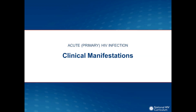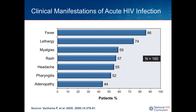Shifting to clinical manifestations: the challenge of diagnosing someone with acute HIV is that the symptoms are so nonspecific. From a graph of about 160 individuals diagnosed with acute HIV, common symptoms include fever, lethargy, myalgias, rash, and headache — a very nonspecific list. A clinician would find it very difficult to pick this out and diagnose acute HIV unless they knew there had been a recent exposure. These symptoms almost always begin within a month after the person has had an exposure to HIV, so tying symptoms to a recent exposure helps a great deal.